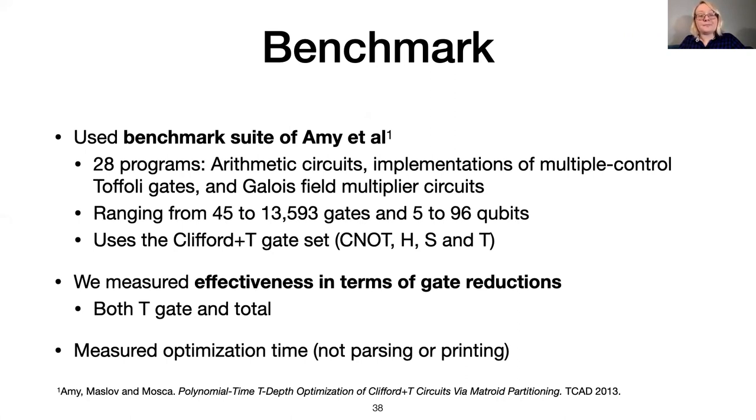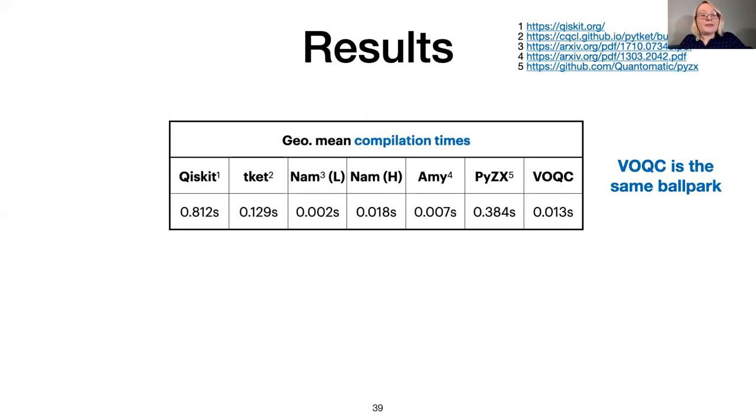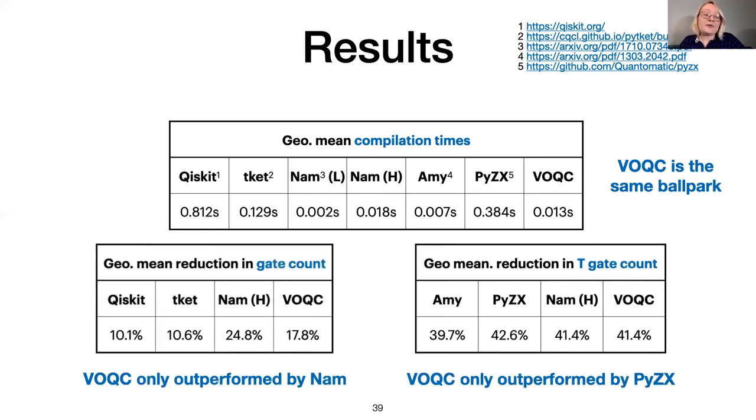VOQC's runtime on these benchmarks is in the same ballpark as existing tools. We have not made the optimizer unusably slow by implementing and verifying it in Coq. In fact, VOQC is faster than the Python-based tools Qiskit, tket, and PyZX. VOQC is also as effective at reducing gate count as we expected, given that we implemented a subset of Nam et al.'s optimizations. The takeaway here is that the optimizations we implemented and verified are powerful, and actually more powerful than what is available in industrial compilers. Most importantly, we are confident that VOQC never performs transformations that change the semantics of the input program. None of these other tools are formally verified, which means that there may be cases where they optimize an input program incorrectly.